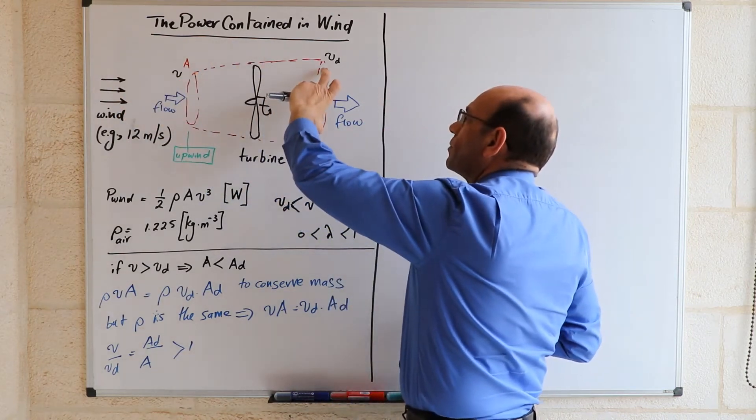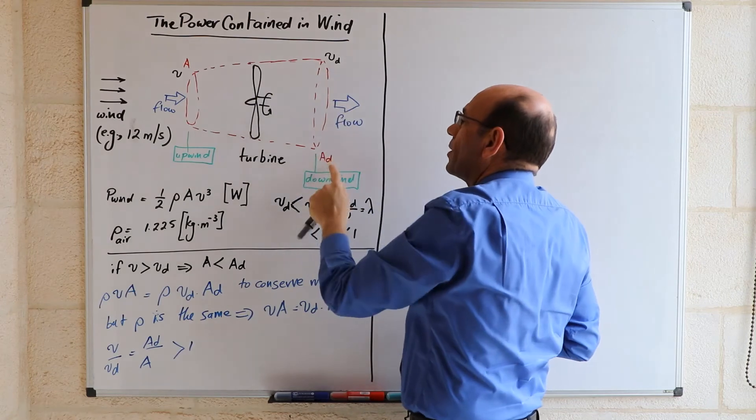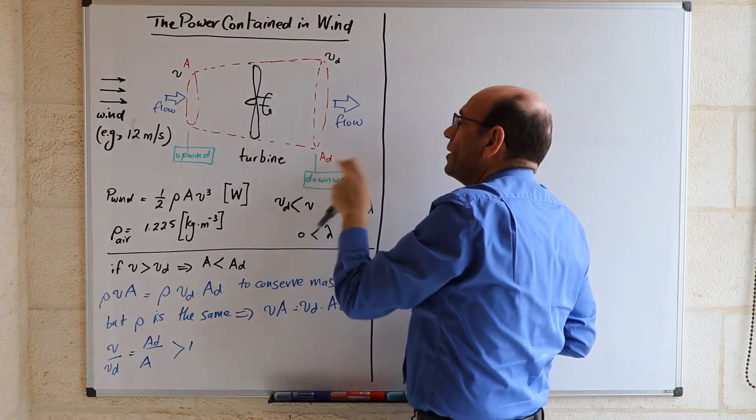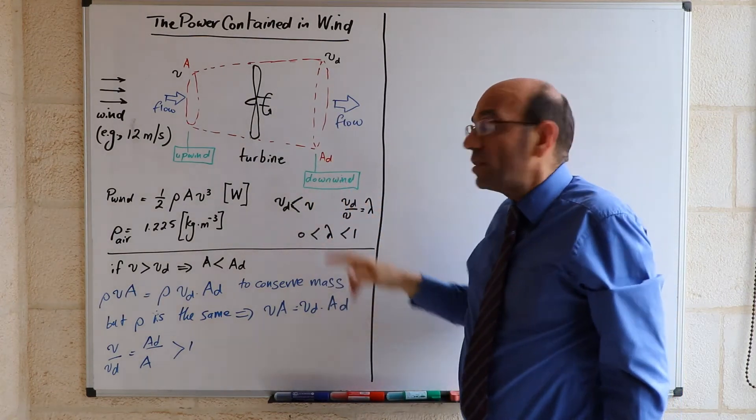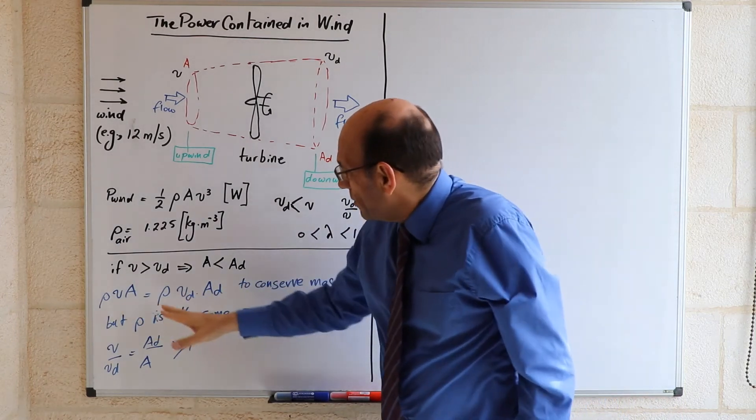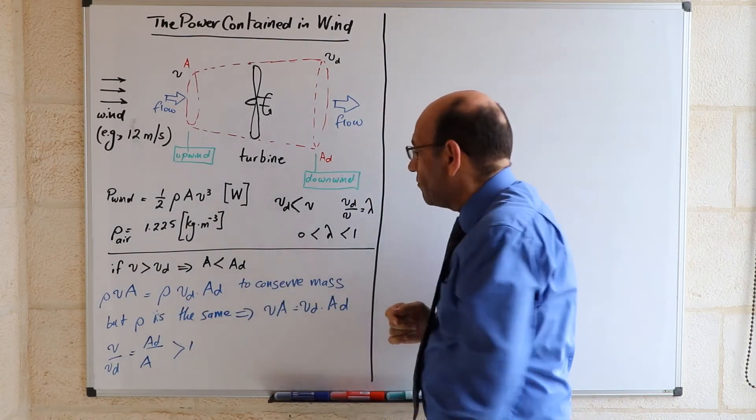capital A, should be equal to the flow of the air through this cross-sectional area, capital AD. And the subscript D stands for downwind. And this is based on the conservation of mass.